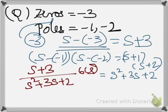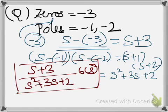This is the required transfer function. Let me just repeat the steps. In the question they give you the zeros and the poles of the transfer function. The zeros are the roots of the numerator, so given that the zero is minus 3, we know s plus 3 is the numerator. Likewise s plus 1 into s plus 2 is the denominator, which simplifies to s squared plus 3s plus 2.